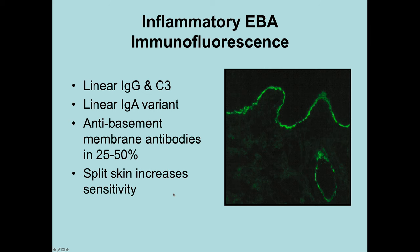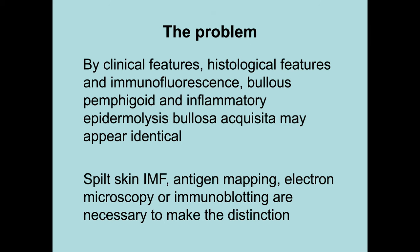The problem in distinguishing bullous pemphigoid from epidermolysis bullosa acquisita is that clinical features, histology, and immunofluorescence may appear identical. To get around this, we have to use different techniques: split skin immunofluorescence, antigen mapping, electron microscopy in the old days, and nowadays immunoblotting and other molecular techniques, which are invaluable.